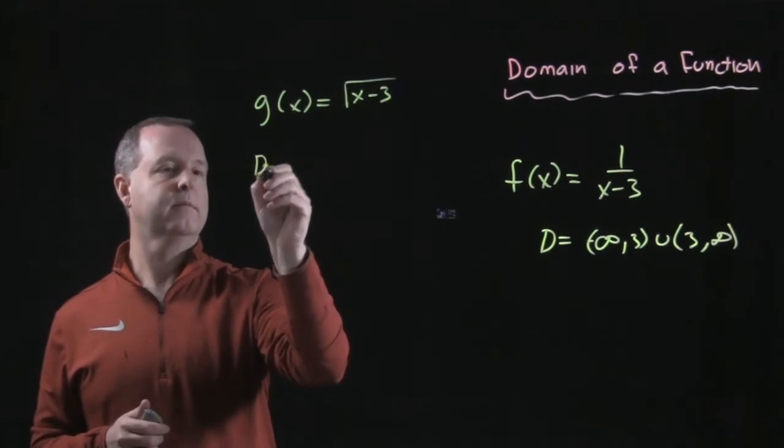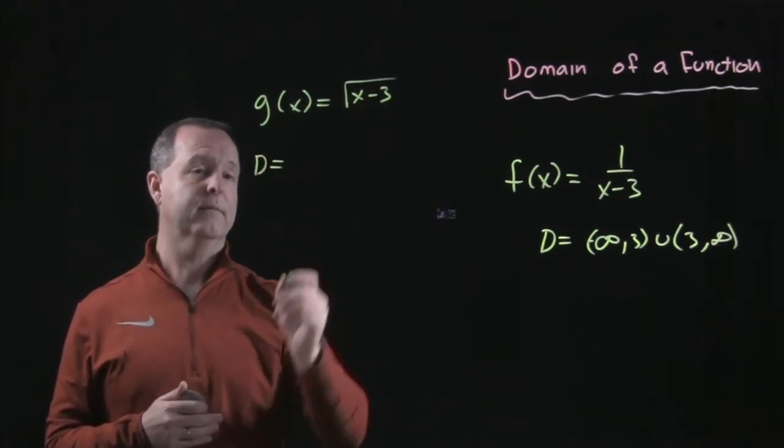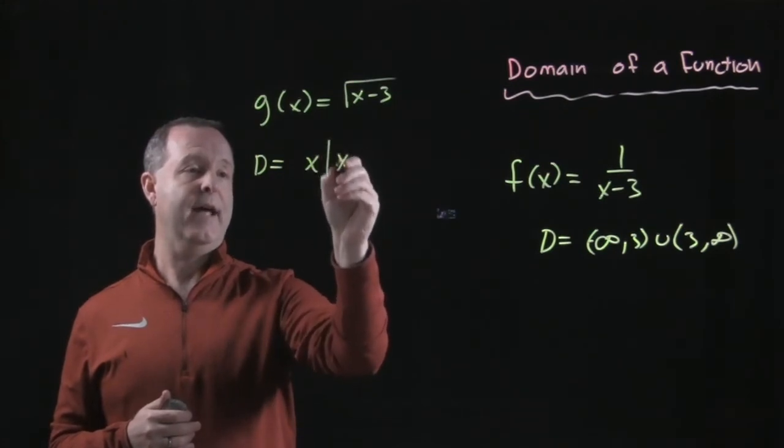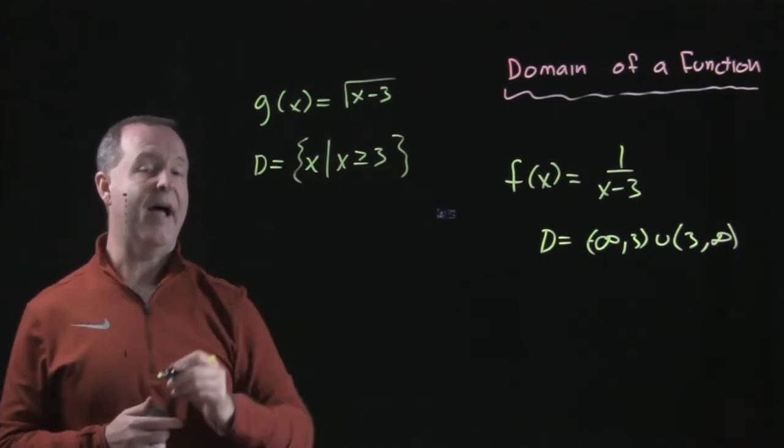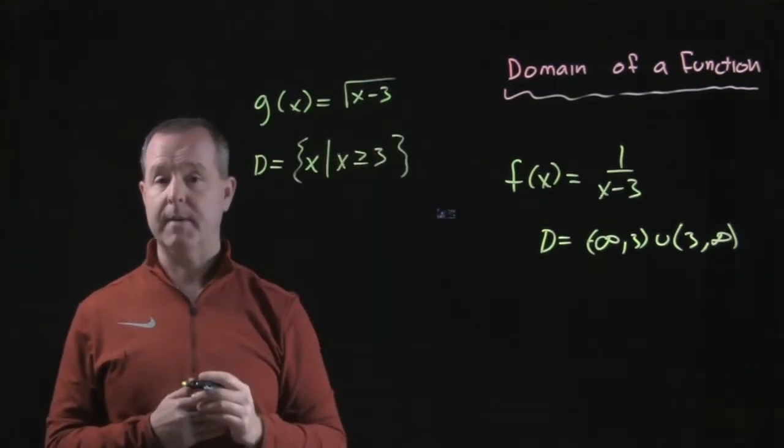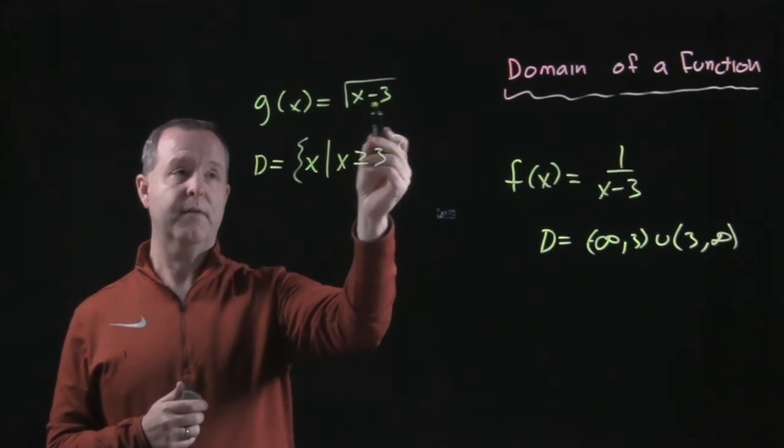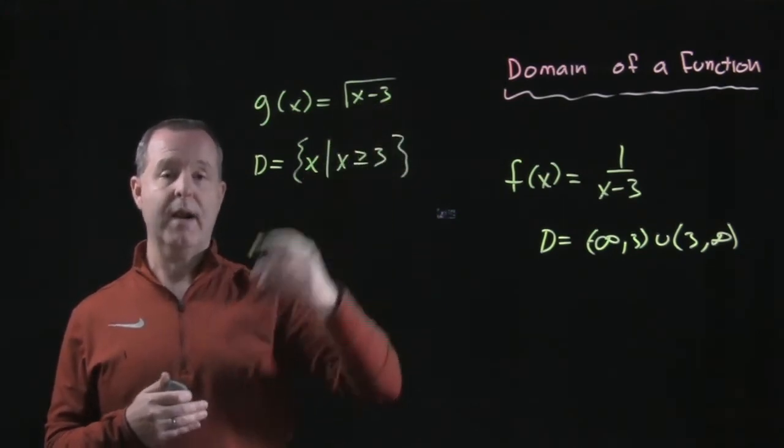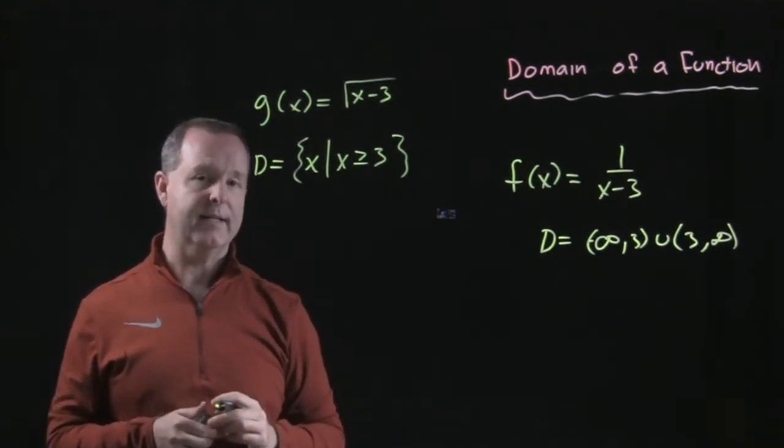Well, the domain in this one works for all values greater than 3. So all x such that x is greater than or equal to 3. If I have a value less than 3, this value becomes negative. If I have a value greater than or equal to 3, the value, when I work it through, is 0 or positive, and that's where I can take a square root of.